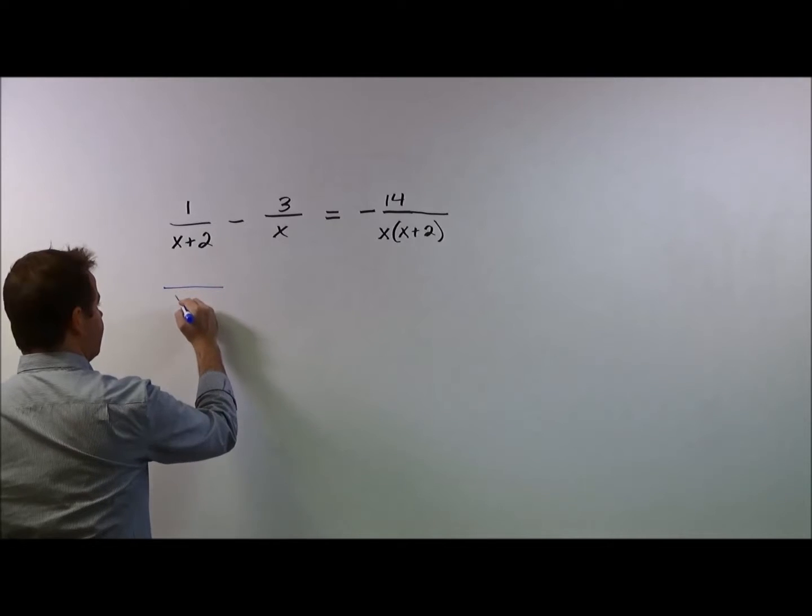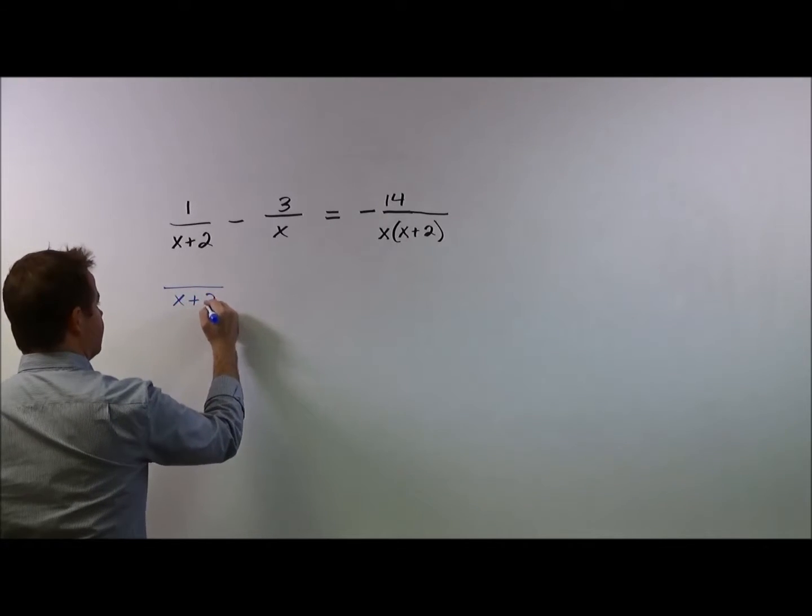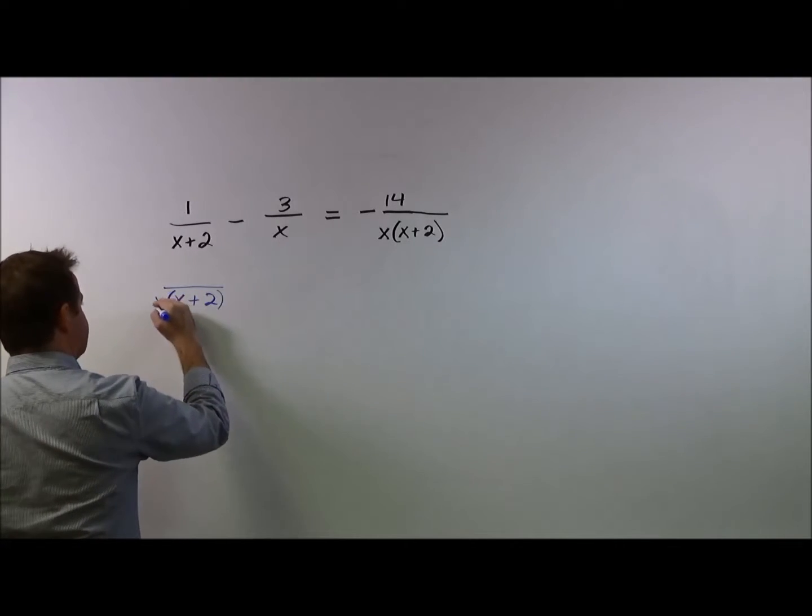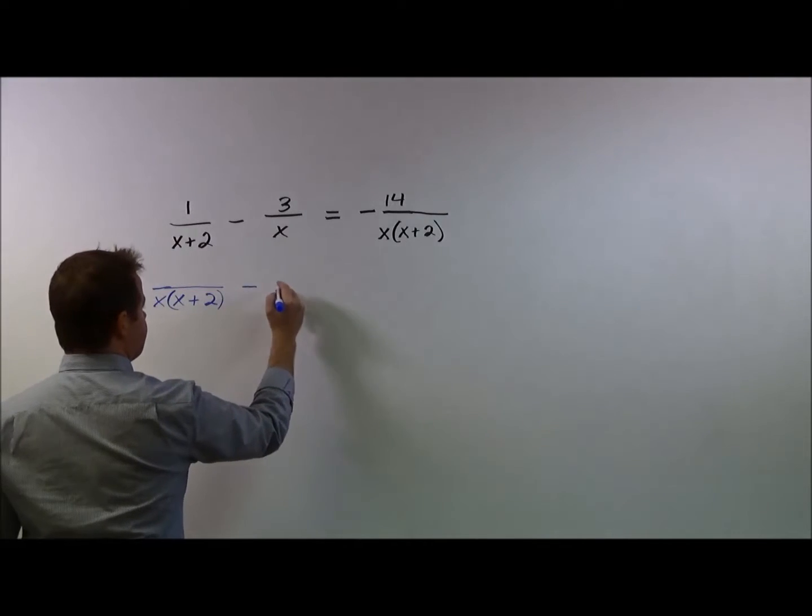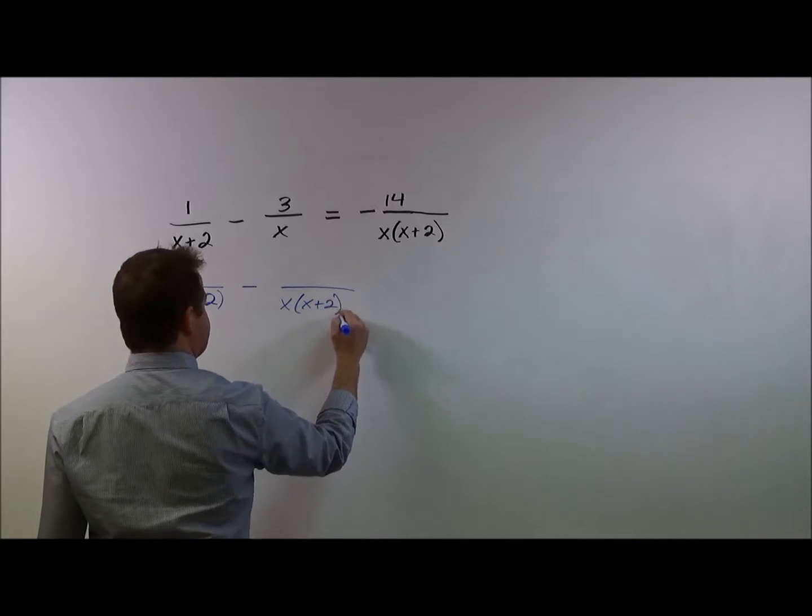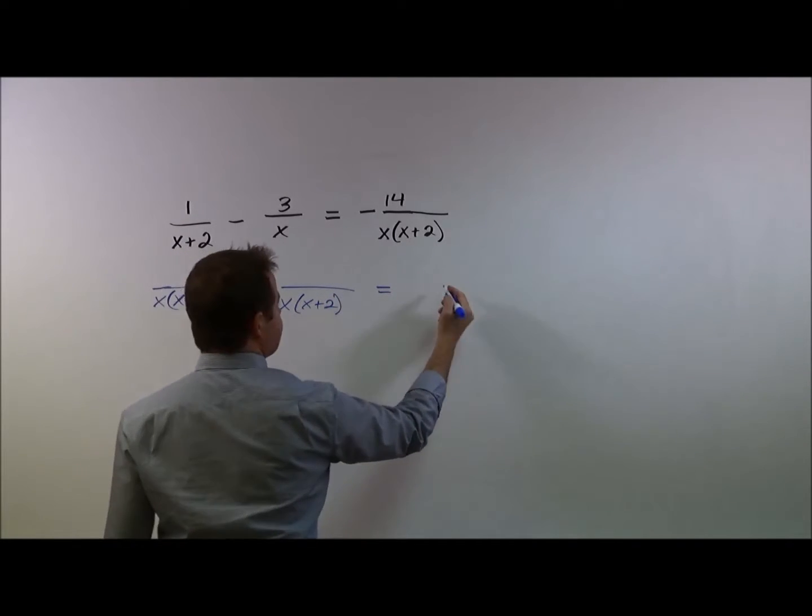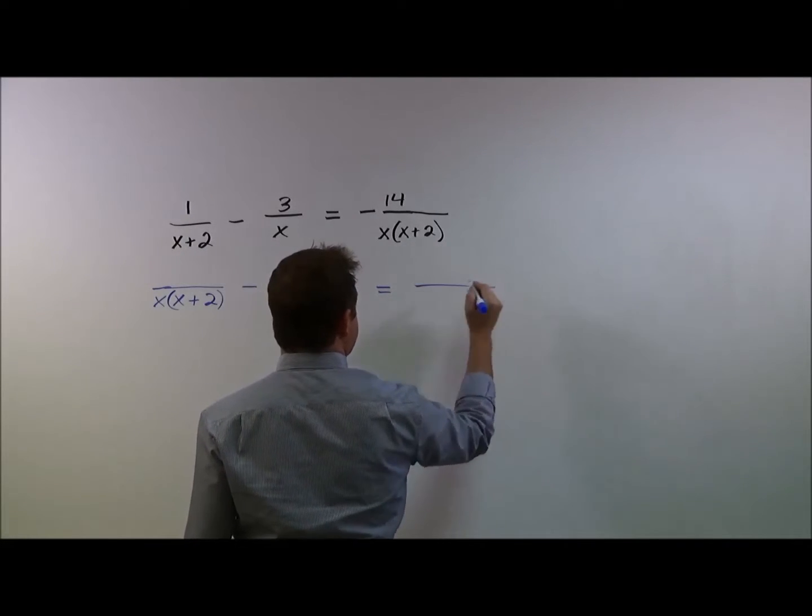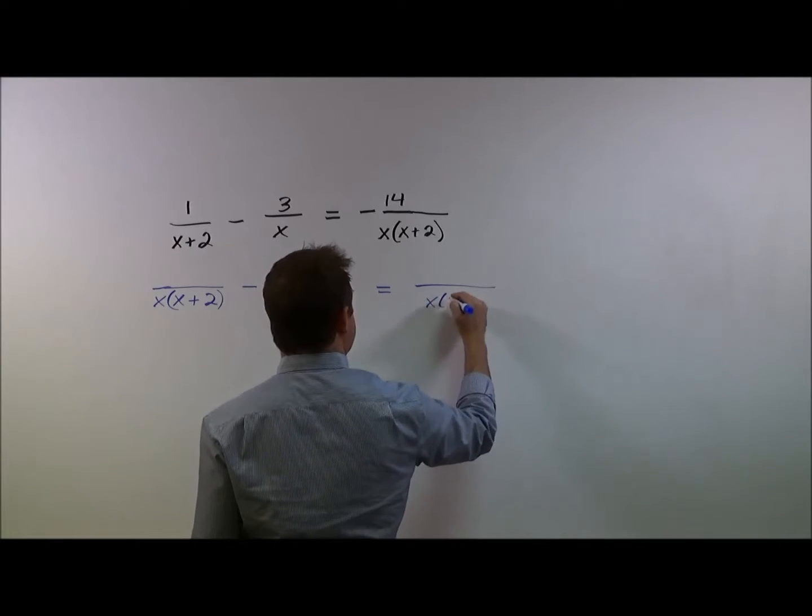You know that's going to be the common denominator for each term. So the easiest thing to do is go ahead and write that down for each one. So x plus 2 times x, x times x plus 2, and on our right side of our equation we see x times x plus 2.